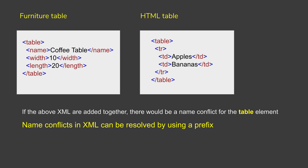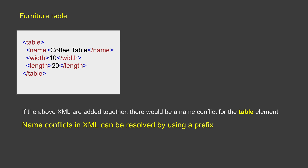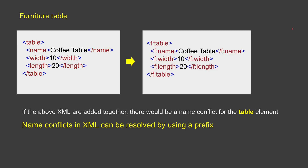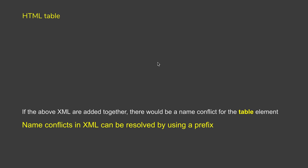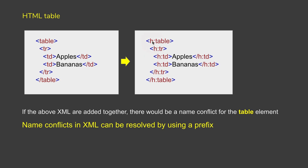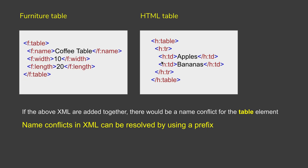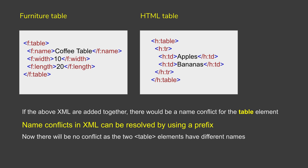To resolve this conflict we can use a prefix in our elements. For example, if I talk about the furniture table, I can add a prefix — here you can see we have added a prefix called 'f' for all the elements. And for the HTML table we can do something similar: we have added a prefix 'h' in front of all the elements. Now these two elements are different and they can be used together with no conflict because we are using different names.